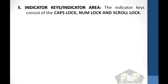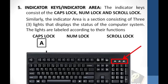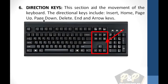5. Indicator keys and indicator area. The indicator keys consist of the Caps Lock, Number Lock, and Scroll Lock. The indicator area is a section consisting of three lights that displays the status of the computer system. The lights are labeled according to their functions: Caps Lock labeled A, Number Lock labeled 9, and Scroll Lock labeled with an arrow. 6. Direction keys — this section aids the movement of the cursor. The directional keys include Insert, Home, Page Up, Page Down, Delete, and the arrow keys.